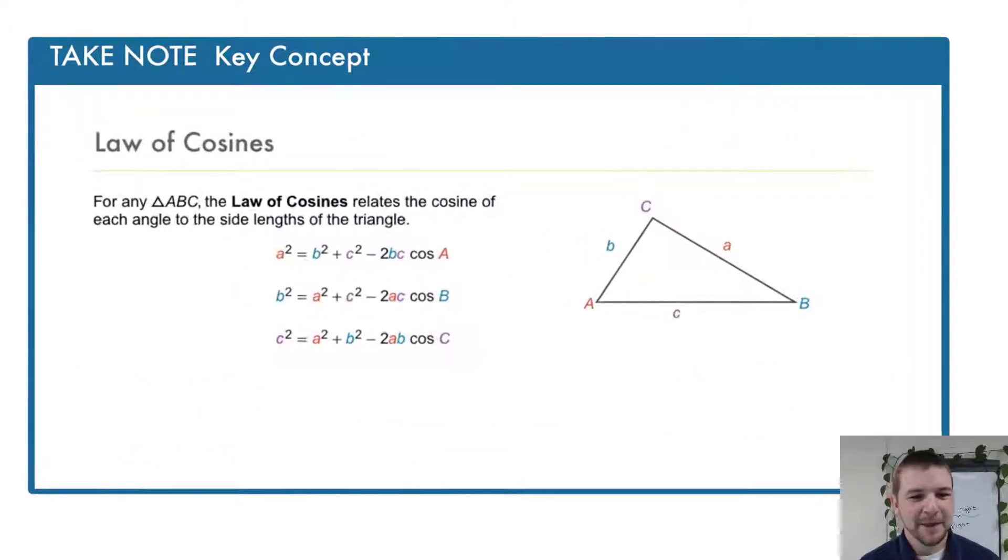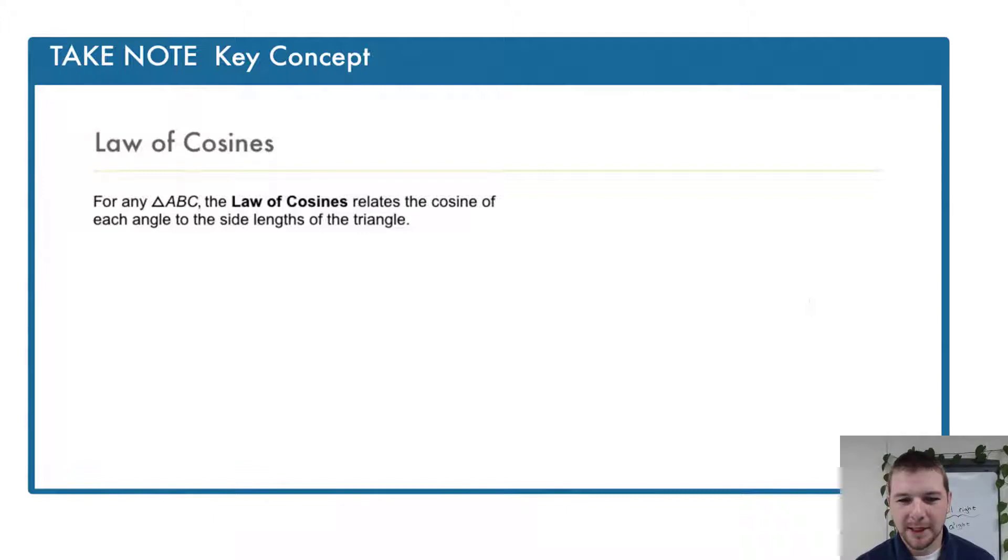The law of cosines. For any triangle ABC, the law of cosines relates the cosine of each angle to the side lengths of the triangle.